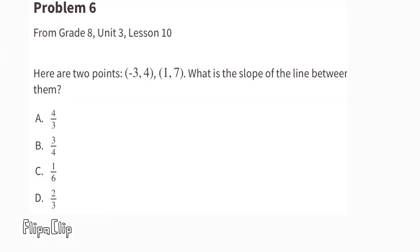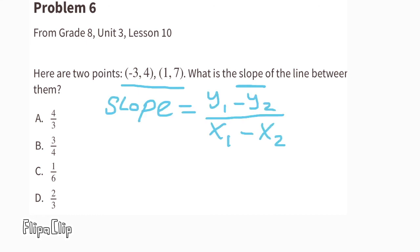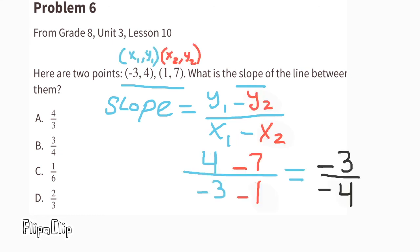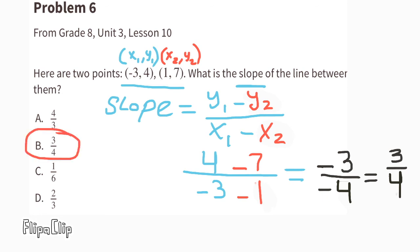Problem number 6, from 8th grade Unit 3 Lesson 10. Here are two points: (negative 3, 4) and (1, 7). What is the slope of the line between them? The slope is the difference of y-values over x-values: (4 minus 7) over (negative 3 minus 1) equals negative 3 over negative 4, which equals 3/4. So the slope is 3/4.